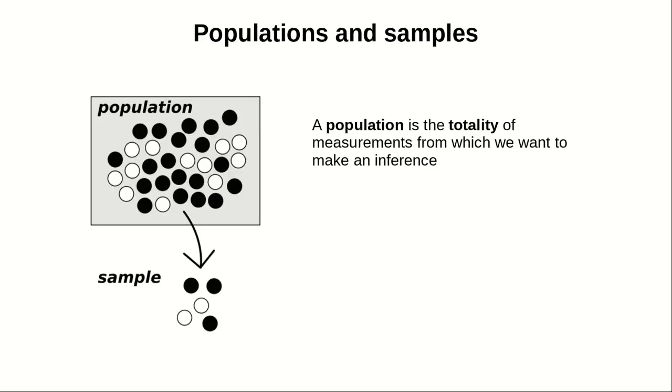In statistics, two of the most important concepts are those of populations and samples. A population is the totality of measurements from which we want to make an inference. A sample is a subset of the measurements, the ones that we actually take.